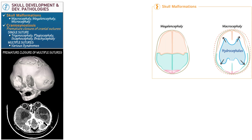In megalencephaly, there is generalized cranial enlargement. It can be due to either anatomic abnormalities — for instance, neurocutaneous disorders — or metabolic abnormalities, for instance lysosomal storage disorders or leukodystrophies.